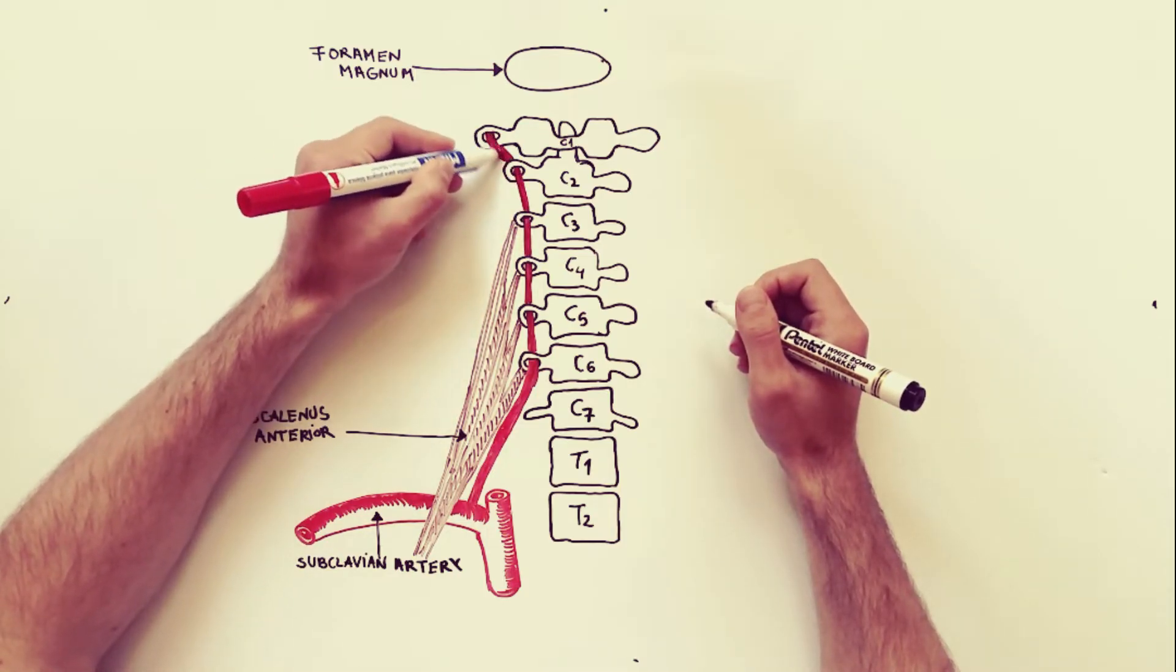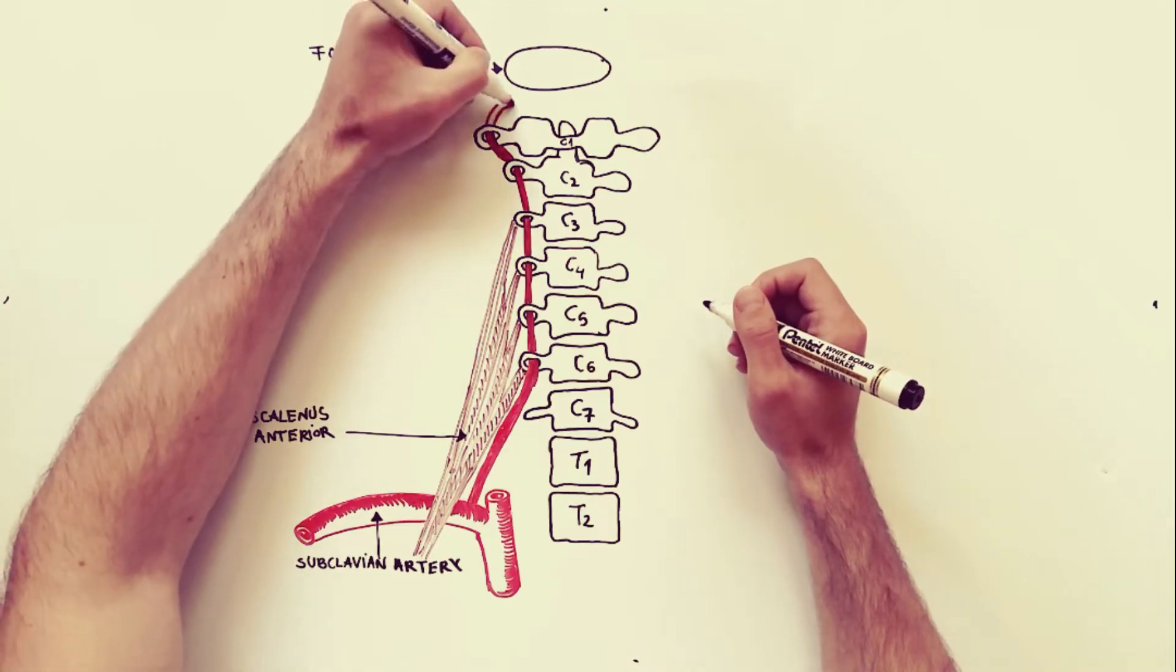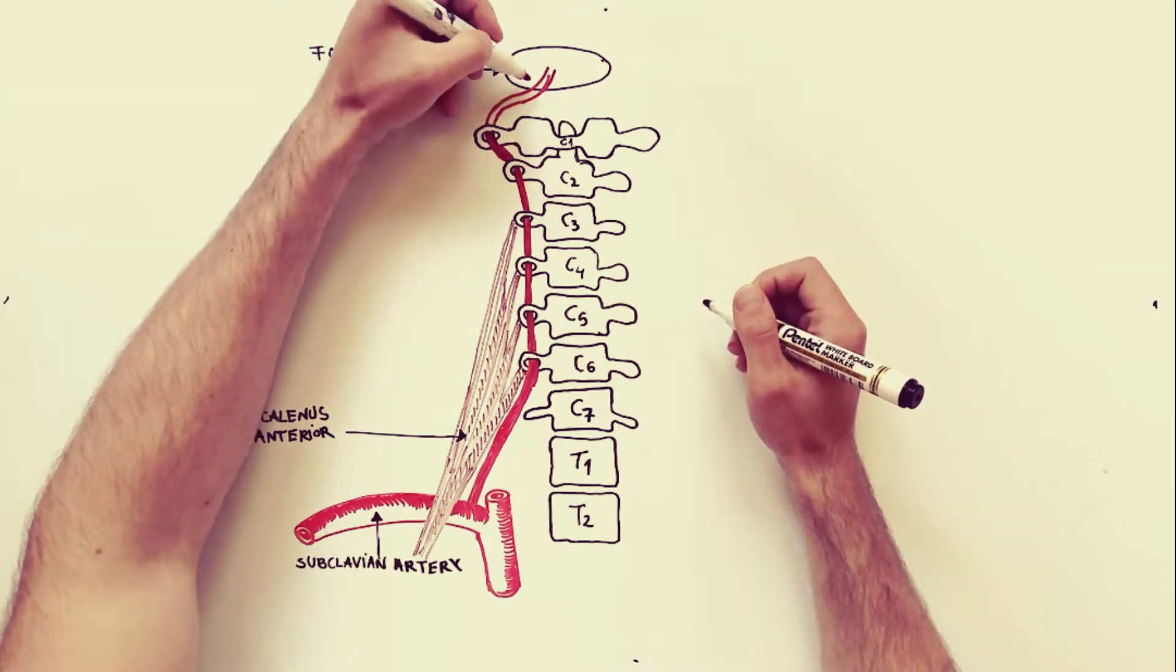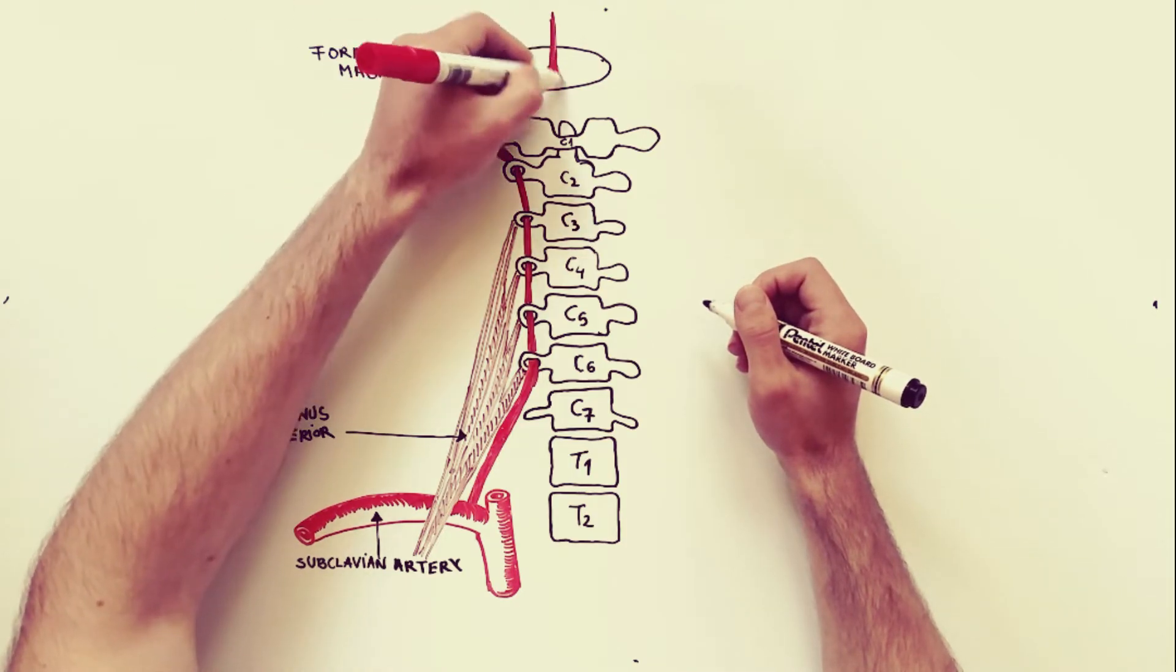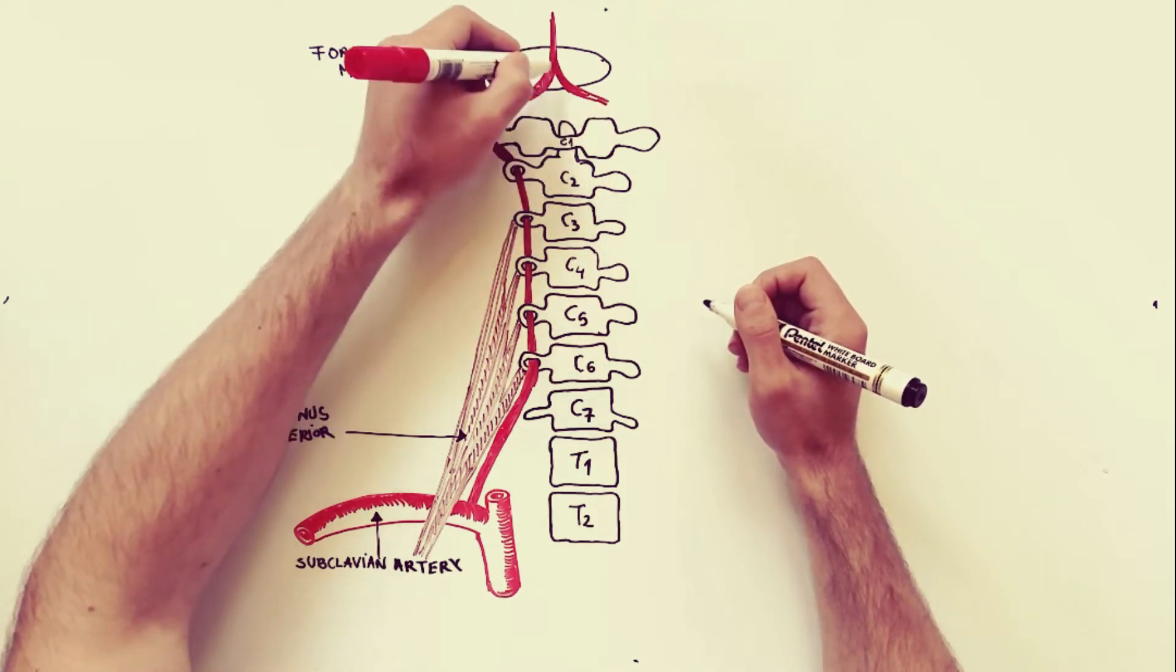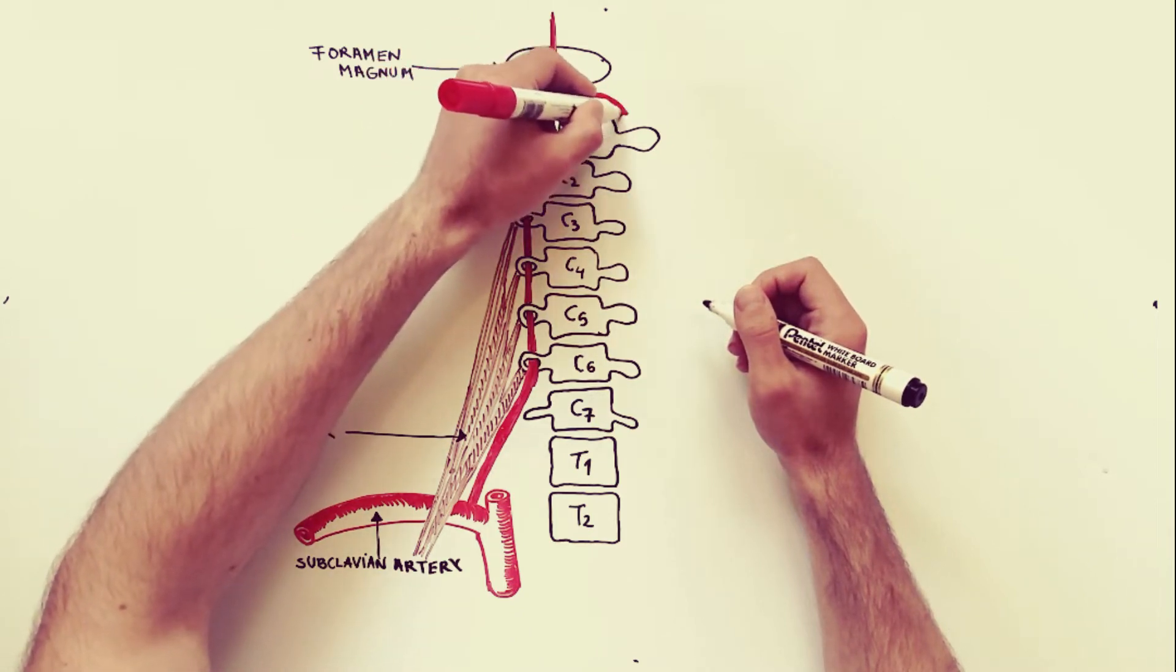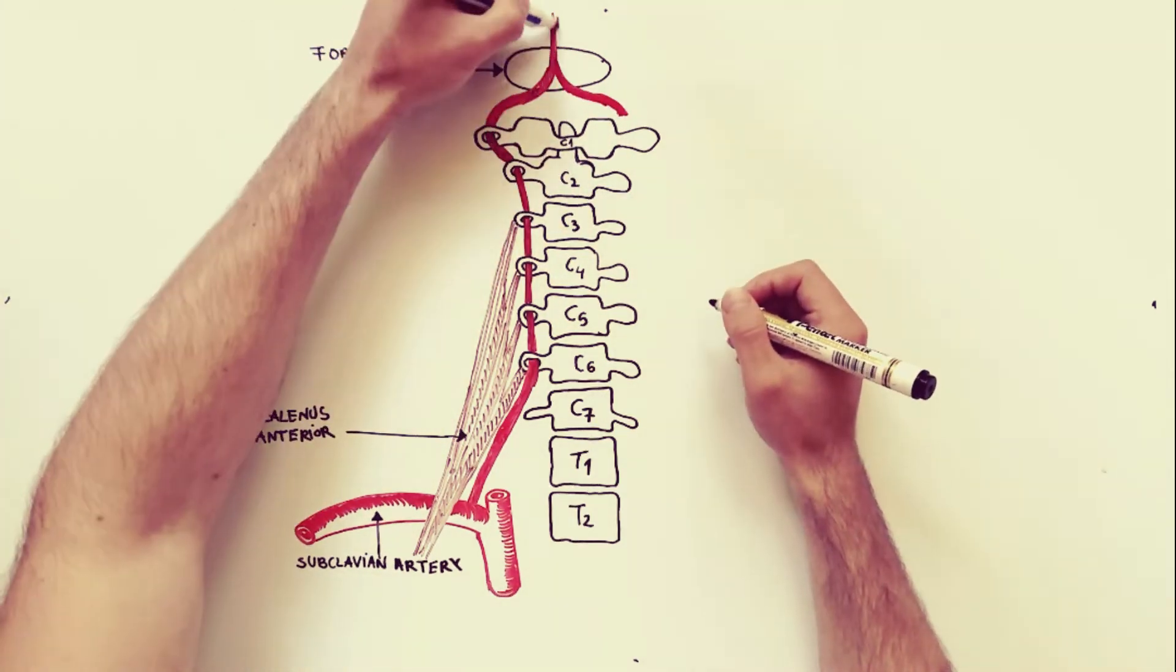Then it passes through the foramen transversaria of the upper six cervical vertebrae. After emerging from the foramen transversarium of C1, it winds backwards around the lateral mass of the atlas and enters the cranial cavity through foramen magnum.